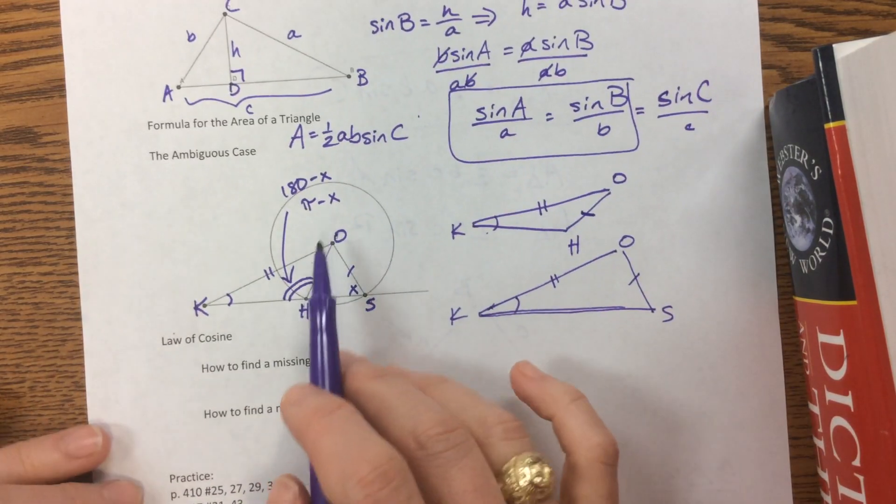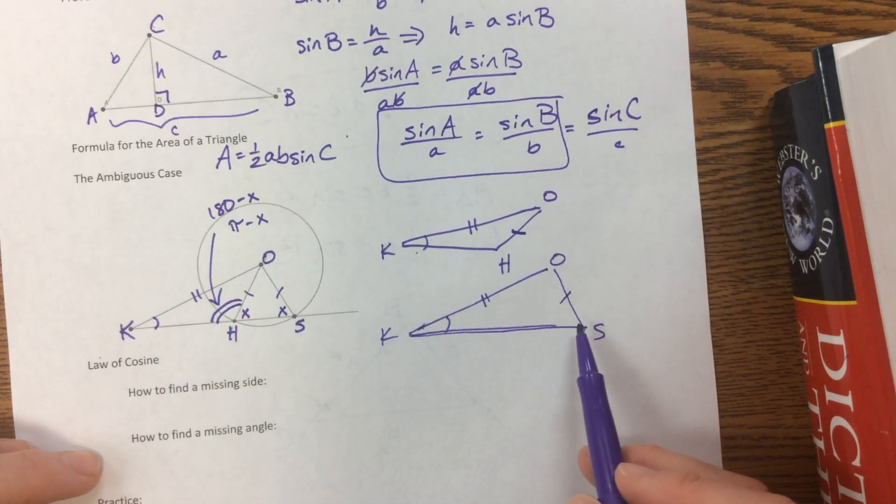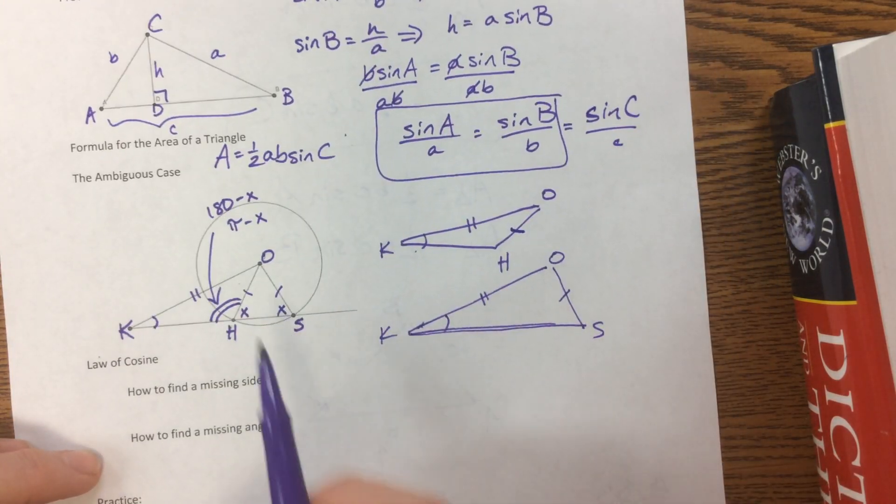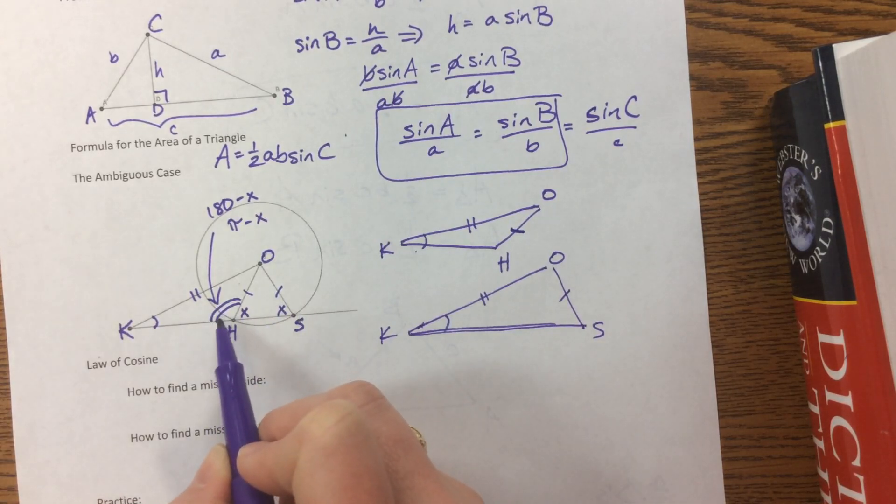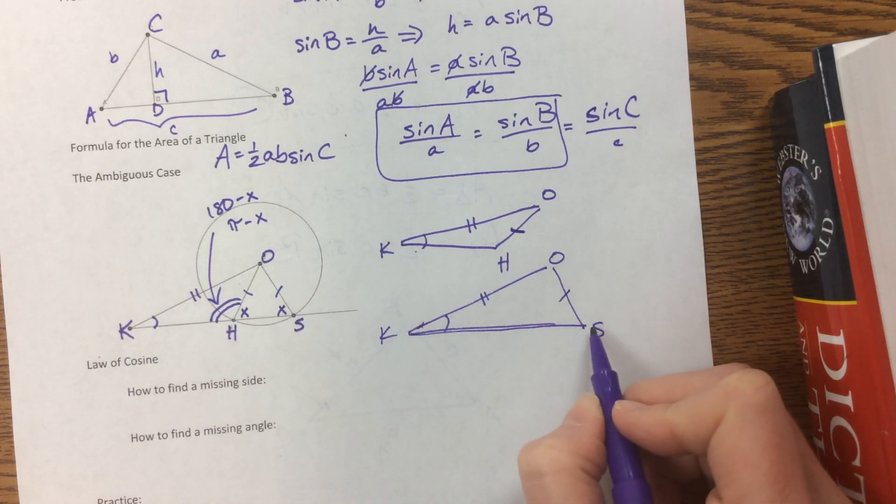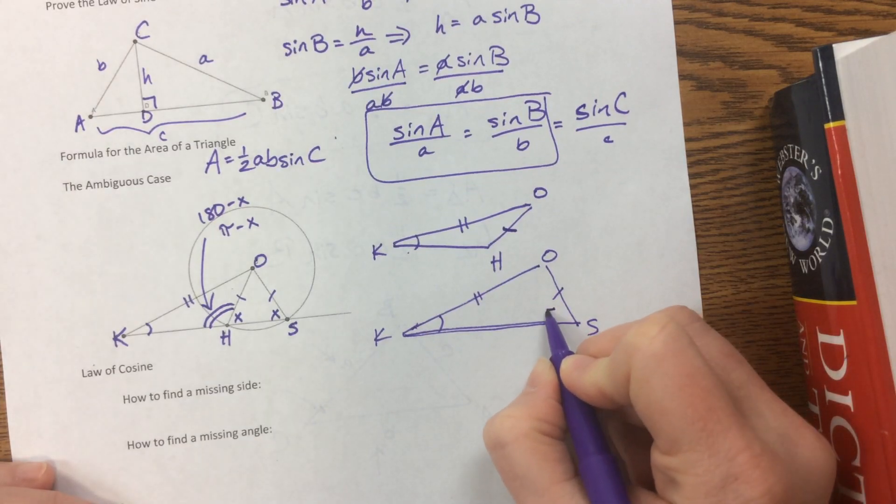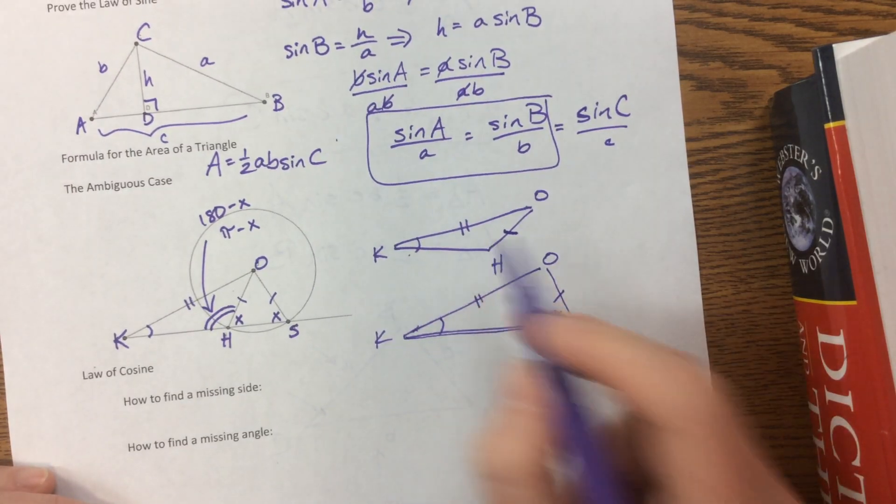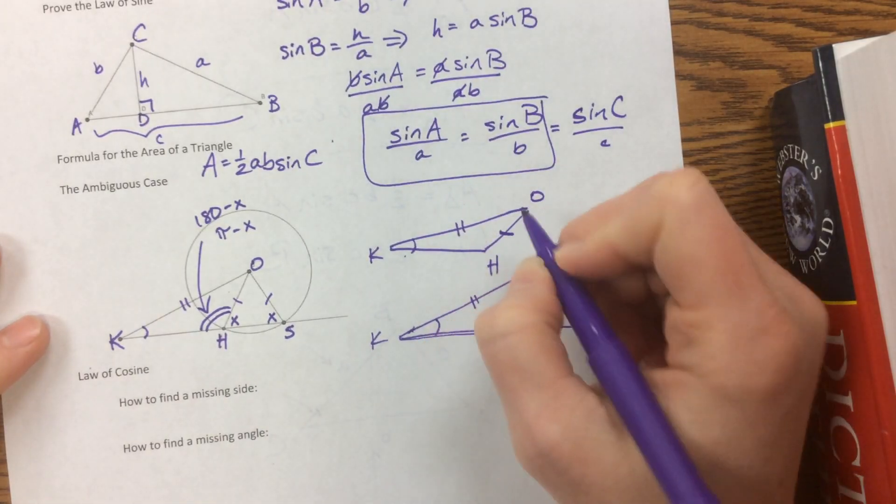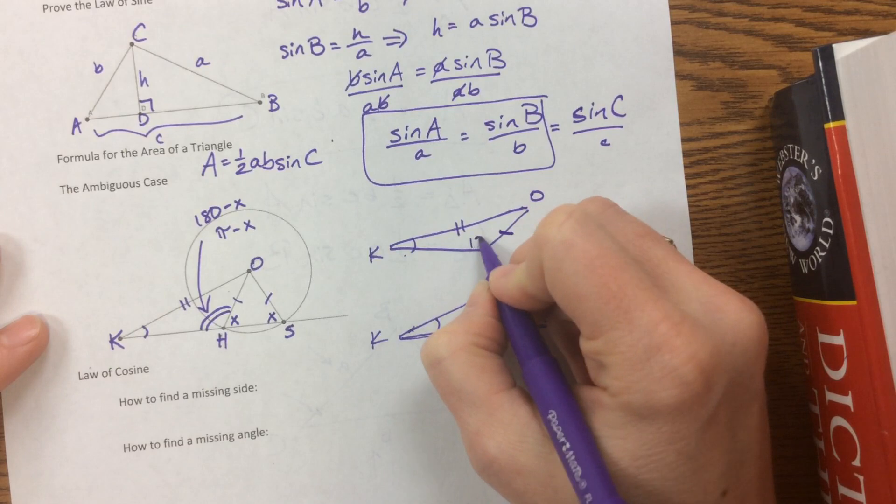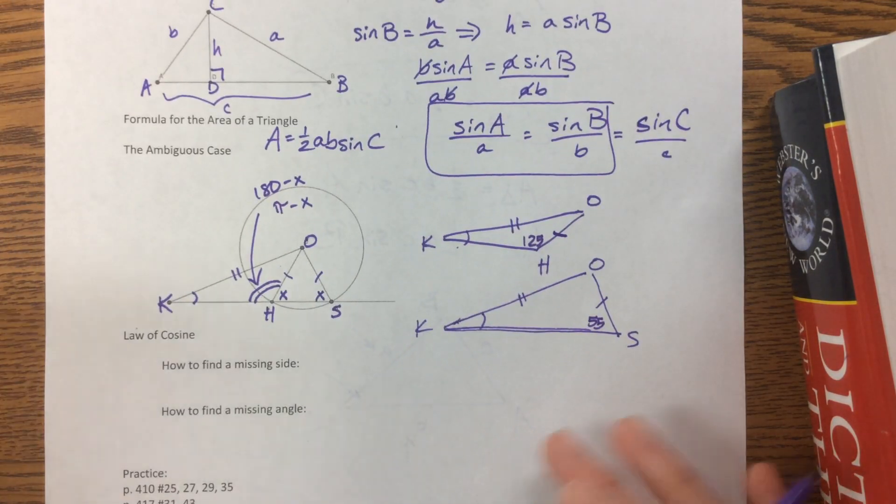So what happens with the ambiguous case is that you may find a situation where you find an angle, that's the first answer that you'd get, and then you have to check its supplement. And it could be that its supplement would also be, so this angle right here, this angle S, say I found it to be 55 degrees. Then angle H would be the supplement of that, which is 125. And that's how that would work. And we'll look at some other examples with actual numbers.